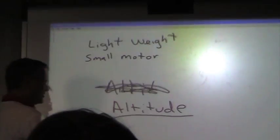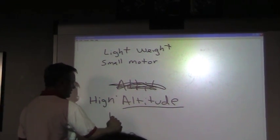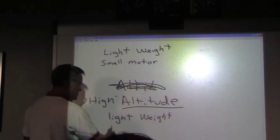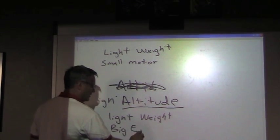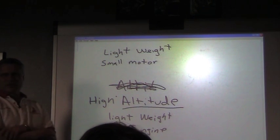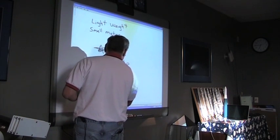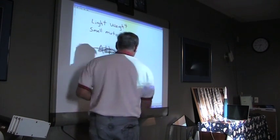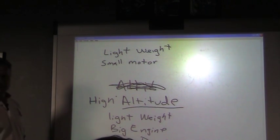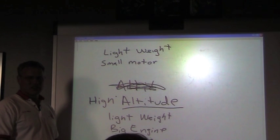We want light weight for high altitude. Big engine. What else? What makes our rocket go higher? Airfoil thin. And what is that called? Aerodynamics. Low drag. Anything else? Longer time for the deployment charge. That's a factor. The other factor is weather.